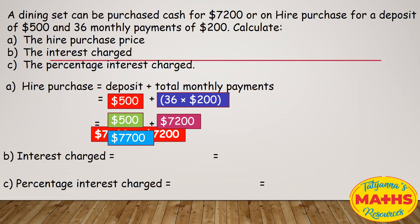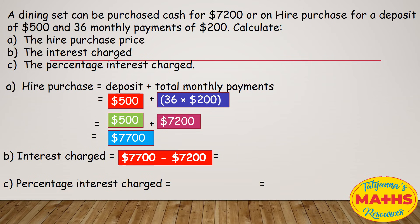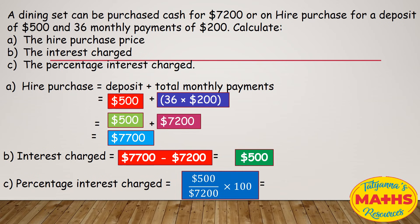For the interest charge: all that is, is how much more you paid. So we take the hire purchase price of $7,700 minus the original price of $7,200, and we get $500. So this customer paid $500 more because they bought the item on hire purchase. For the percentage interest charge, we take the interest charge of $500, put it over the original cost of $7,200, and multiply by 100.